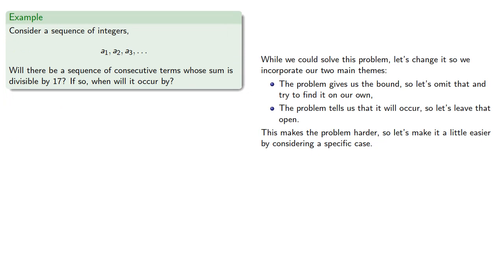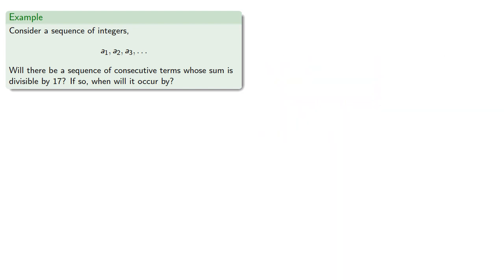So here we just have a sequence of integers, and we don't know if there will be a sequence of consecutive terms whose sum is divisible by 17. But if there is, when will it occur by?